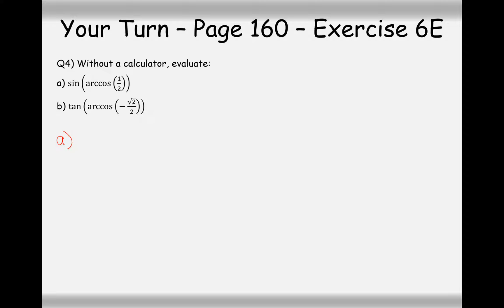Okay, so in my opinion, these two questions here are not too bad, really. We just have to work out what the inverse cos of a half is and then sign the answer. So what cos angle gives us a half as its answer? 60 degrees does. So in this case here, 60 degrees is the answer to the inside of the bracket. Signing 60 is then root 3 over 2.